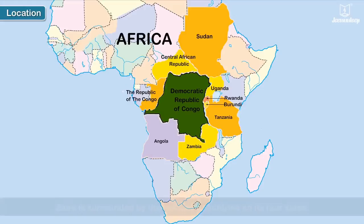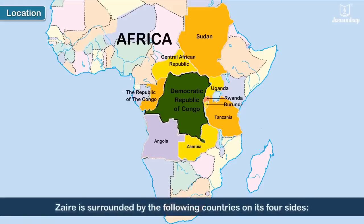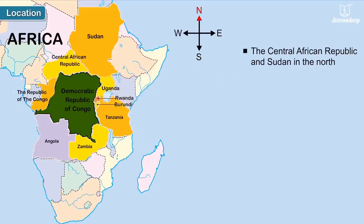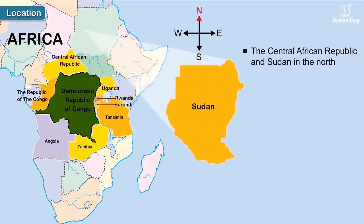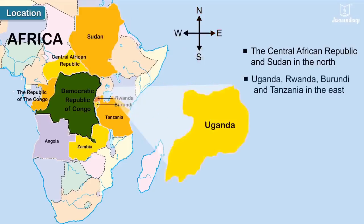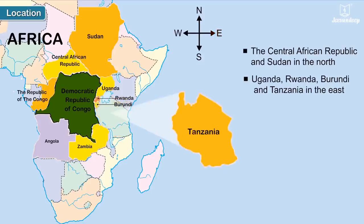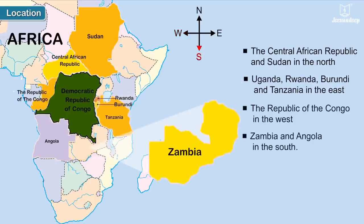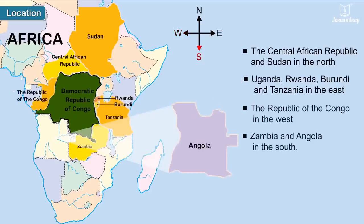Location: Zaire is surrounded by the following countries on its four sides. The Central African Republic and Sudan in the north; Uganda, Rwanda, Burundi and Tanzania in the east; the Republic of Congo in the west; Zambia and Angola in the south.